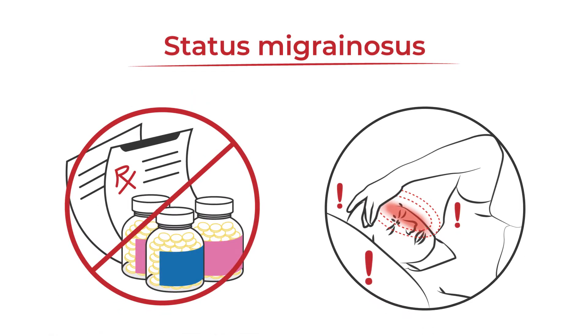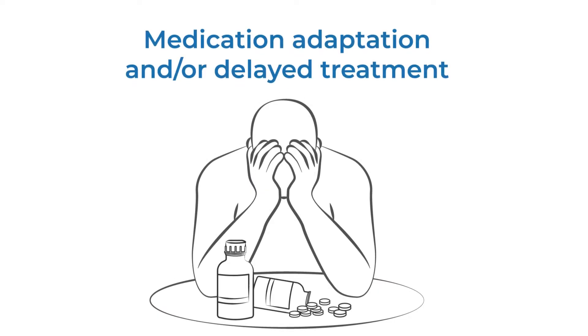Status migranosis generally occurs due to ineffective treatment, an adaptation to medication, or when abortive medications are taken too late in the migraine cycle.